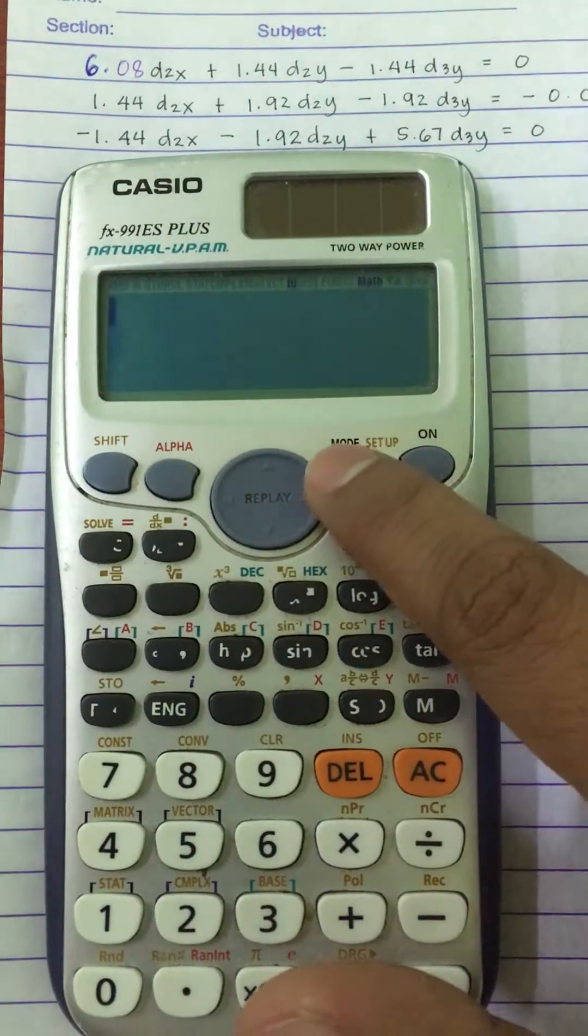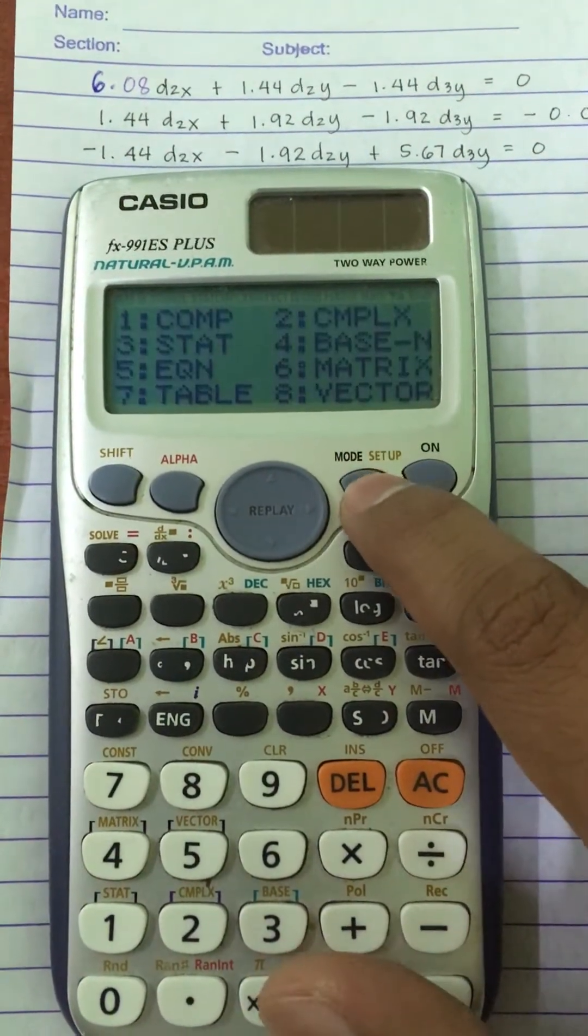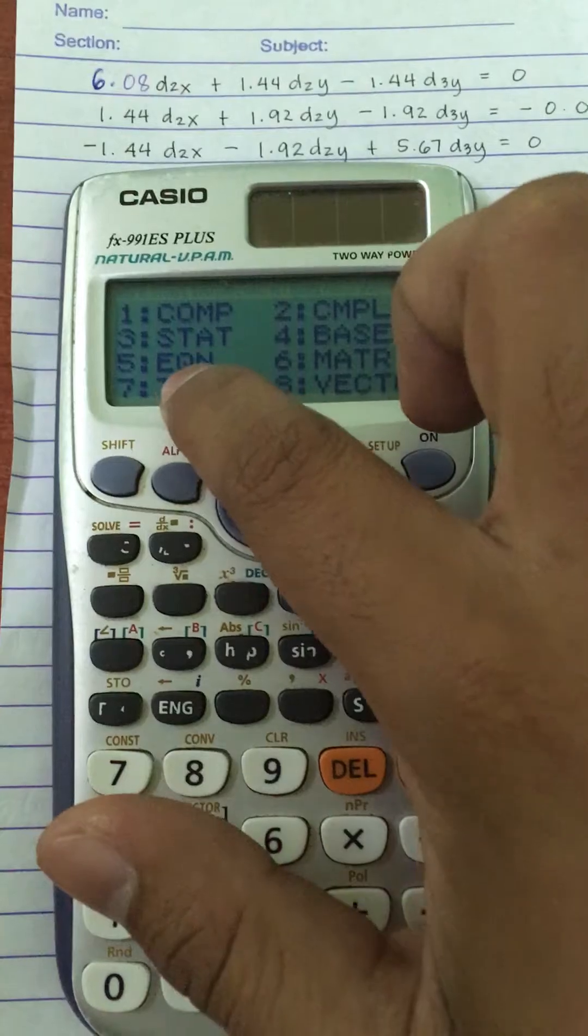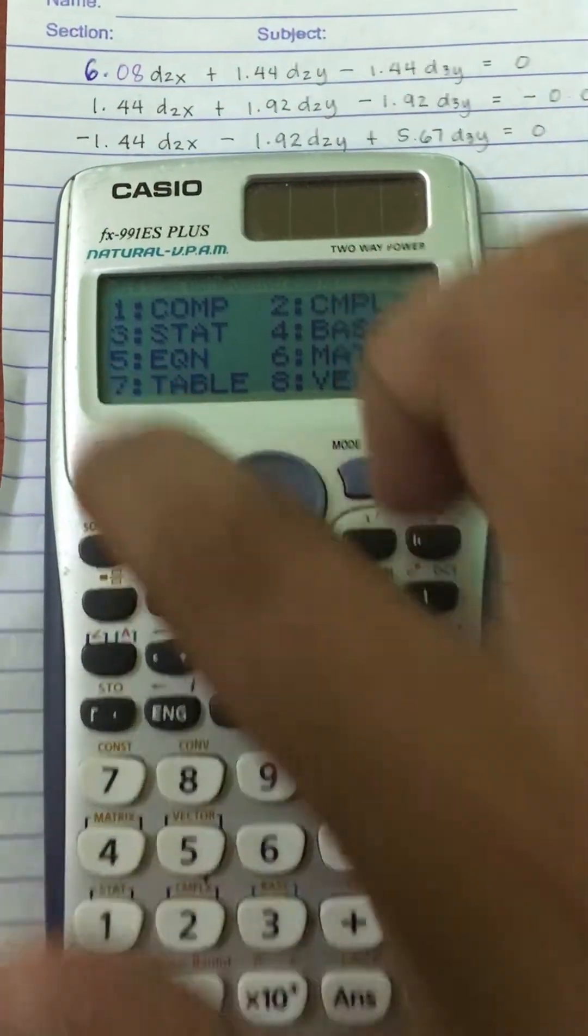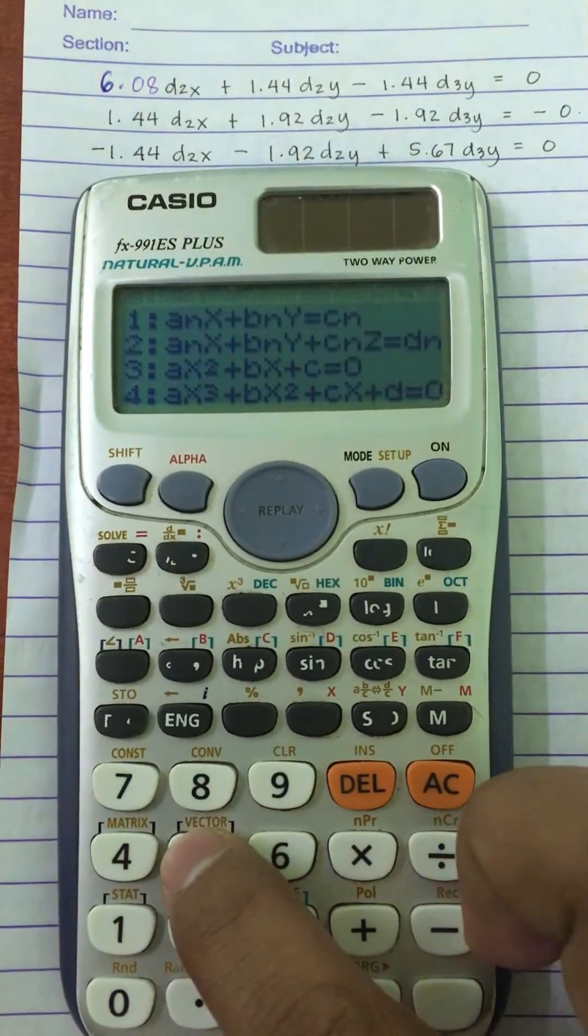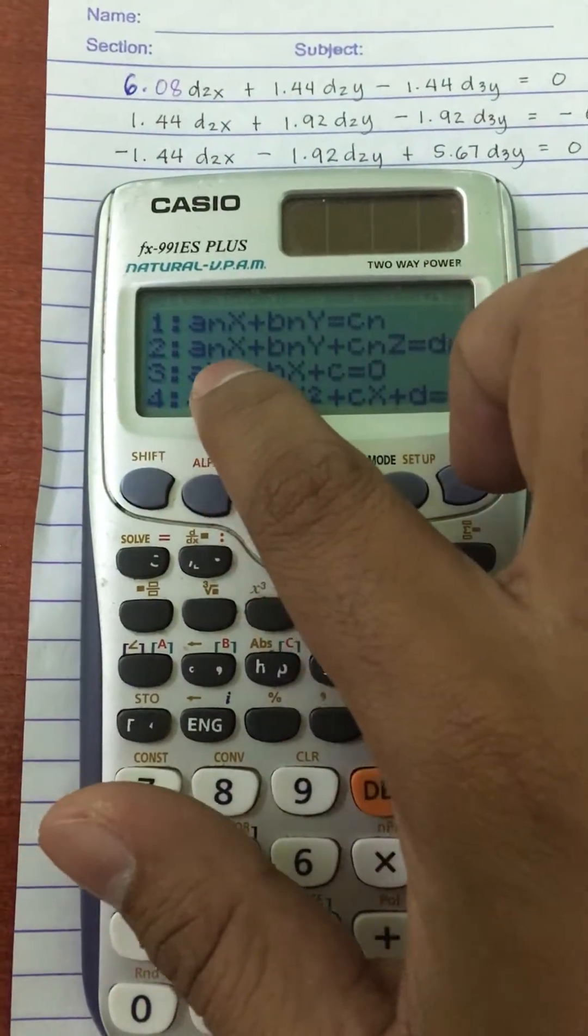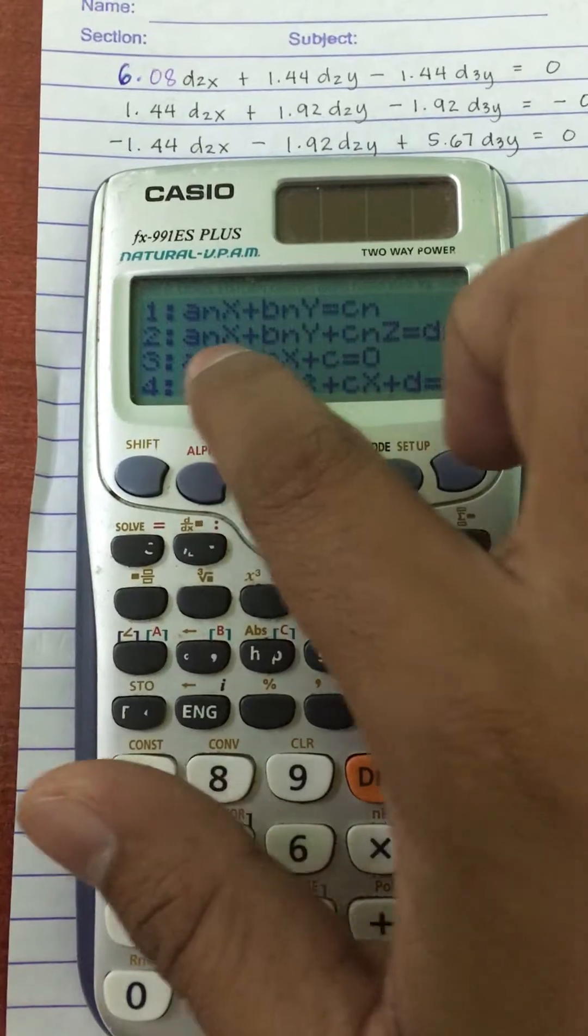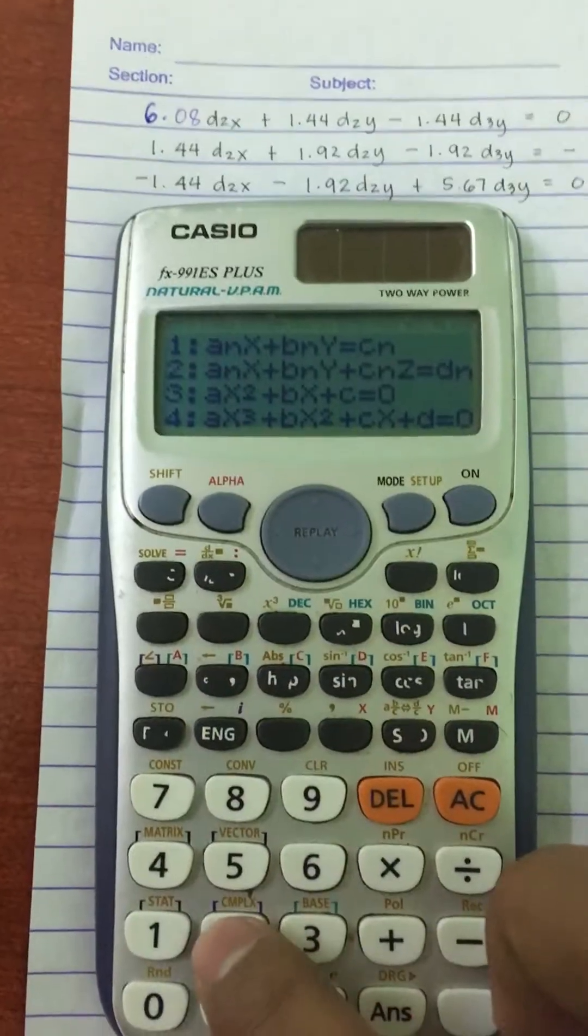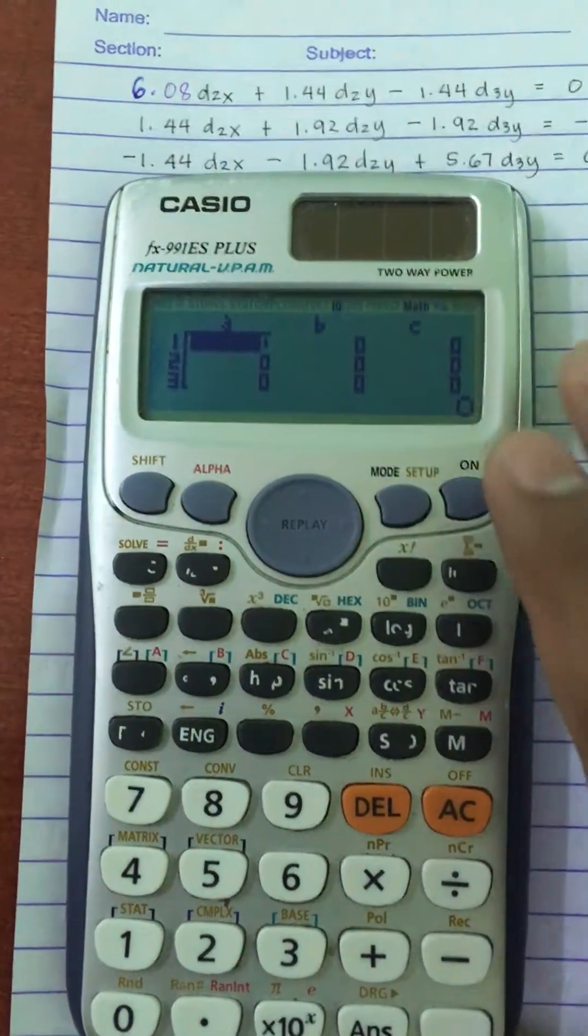Press mode here, and then you search for equation. So equation, we press 5, and then we want this equation, 3 equations or the 3 unknowns. So we have to press 2 here.